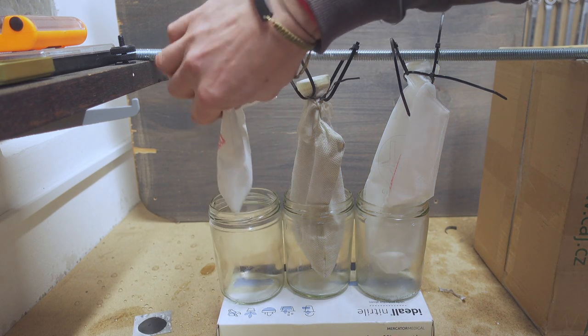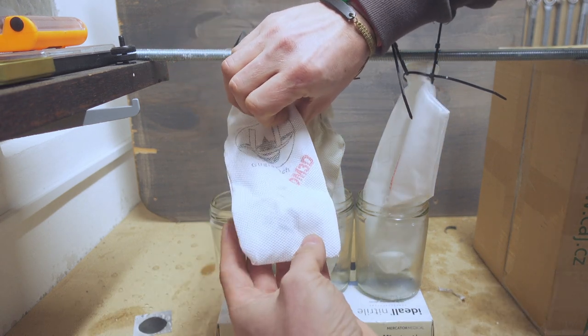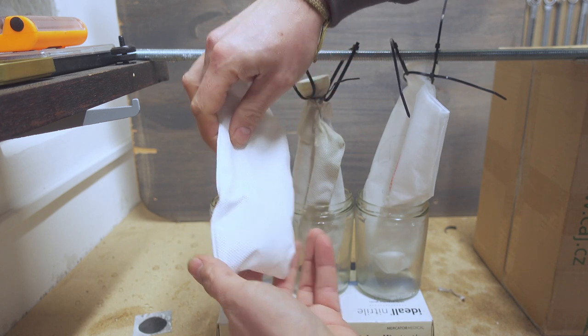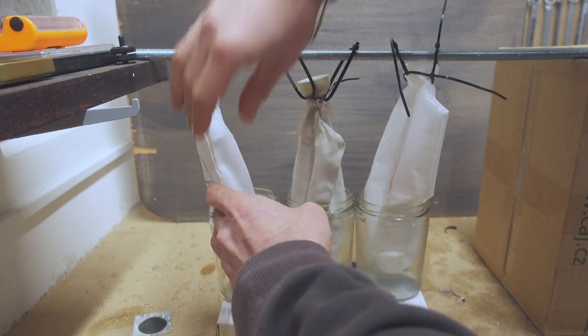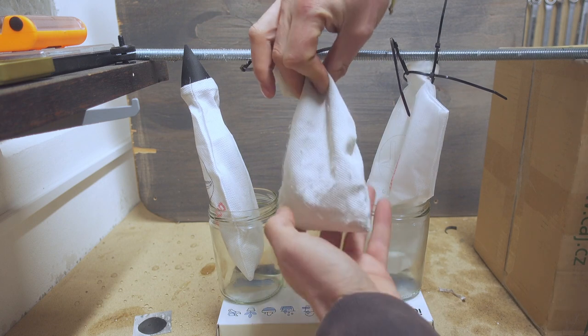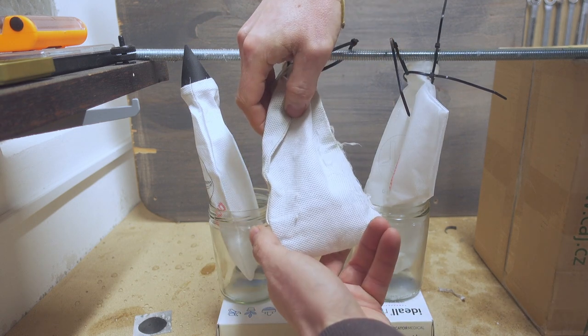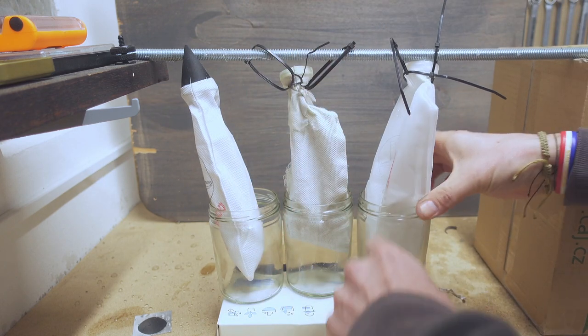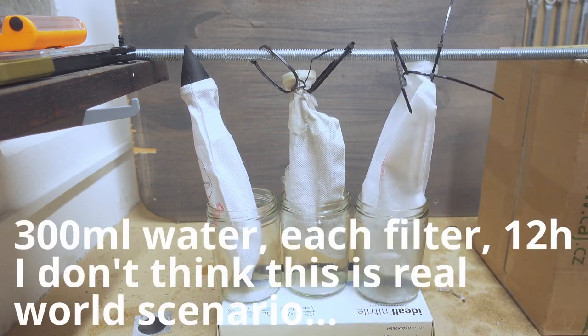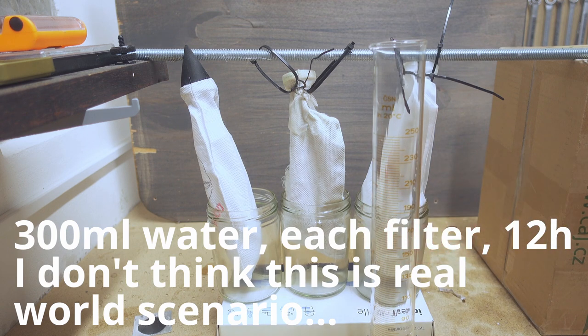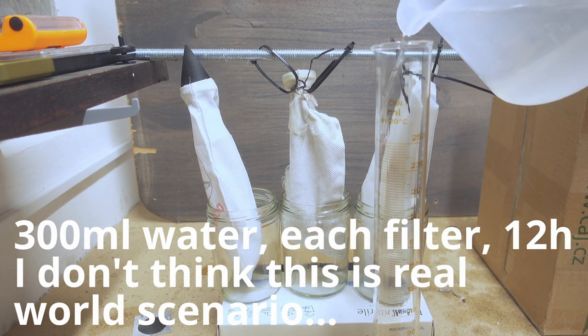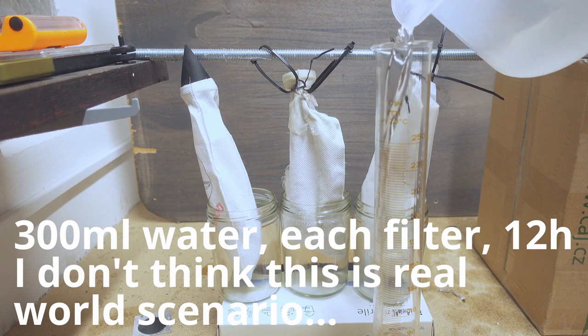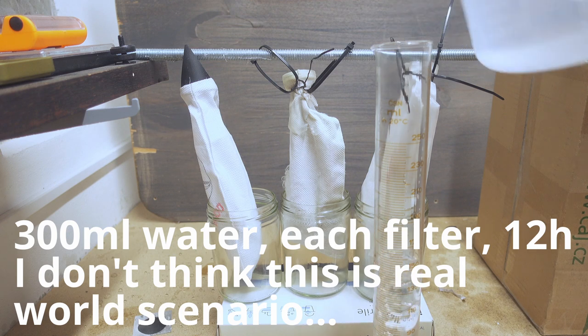So as expected in a sense, no water coming through these 150 ml. Not even this one which is super beaten up. So let's put the competition a notch up. I'm going to add another 150 ml to each. So we will have 300 ml of water in each of them.